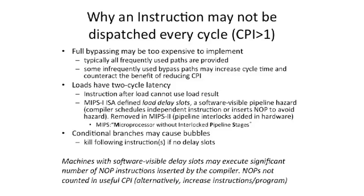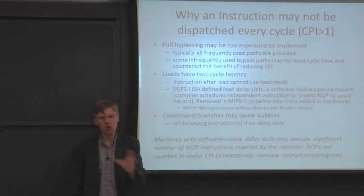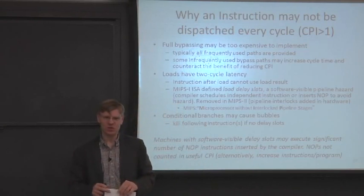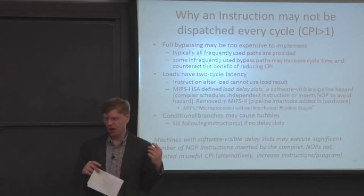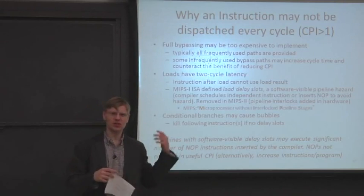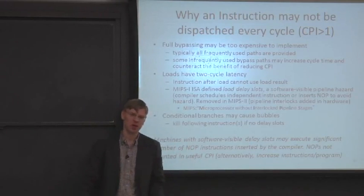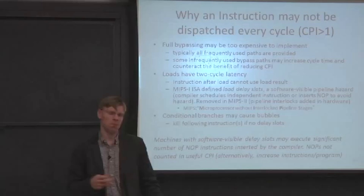Interestingly, the MIPS 1 architecture actually defines load delay slots, very similar to branch delay slots. MIPS 1 had load delay slots — software-visible slots that you had to fill — which could solve this pipelining hazard. The compiler would schedule some non-dependent instruction into that slot. This was ultimately removed from the ISA and stalling was put back in, because as you went to different pipeline lengths and microarchitectures it became onerous. This is really one of the big problems with both load and branch delay slots: they're not very microarchitecture-independent.